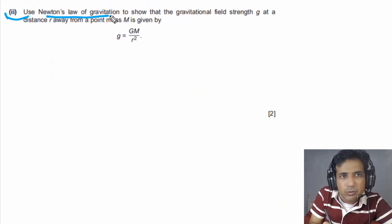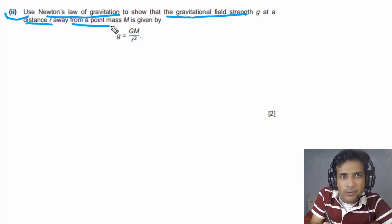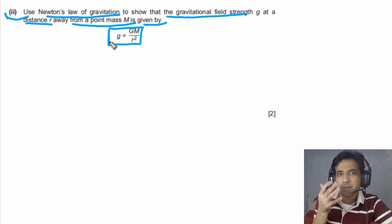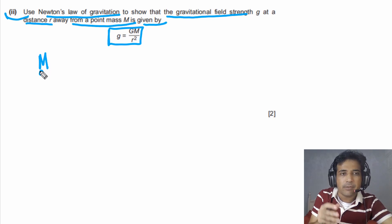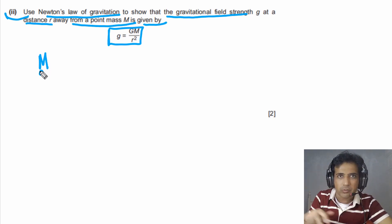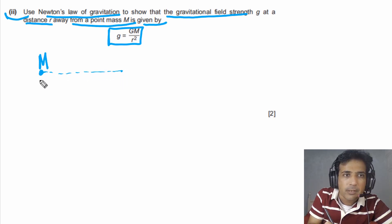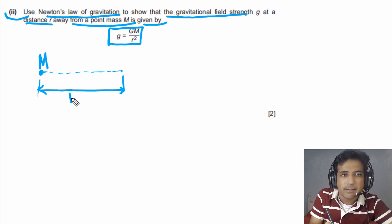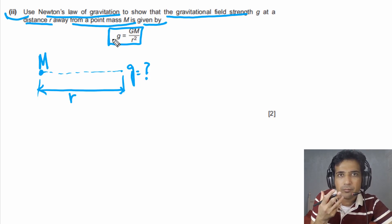For part B, we need to use Newton's law of gravitation to show that the gravitational field strength g at a distance r from a point mass M is given by g = GM/r². Imagine a point mass M with its gravitational field. We need to find the value of g at distance r from this mass — we need to derive this equation.